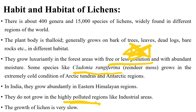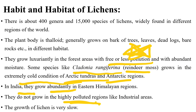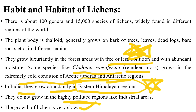In highly polluted regions, lichens cannot grow. Some species of Cladonia, known as reindeer moss — Cladonia rangiferina — grow in extremely cold conditions of the Arctic tundra and Antarctic region. In India, lichens grow abundantly in the eastern Himalayan region, though their growth is very slow.